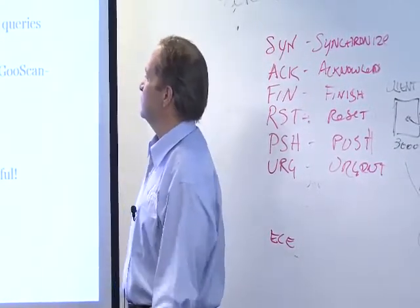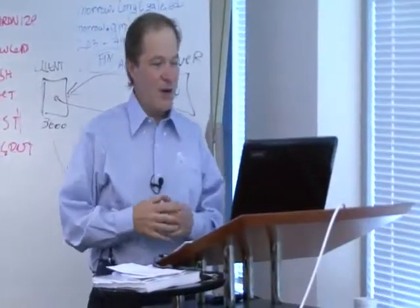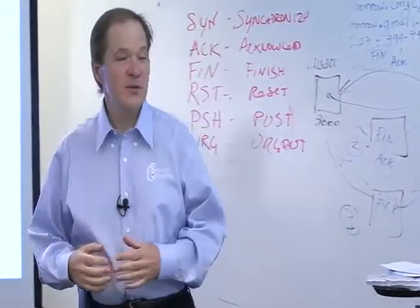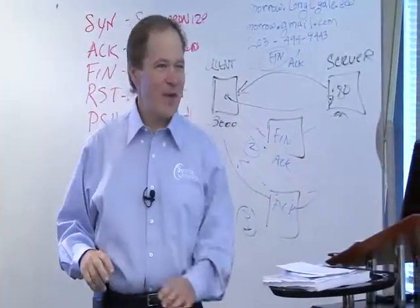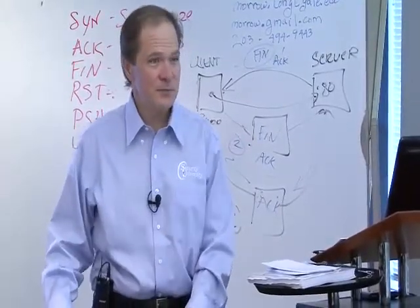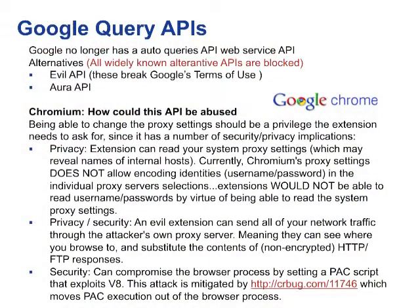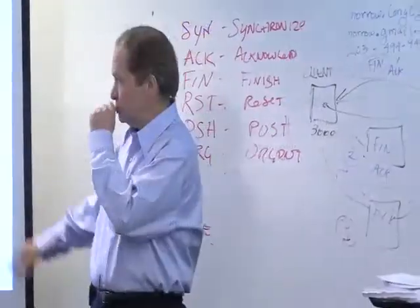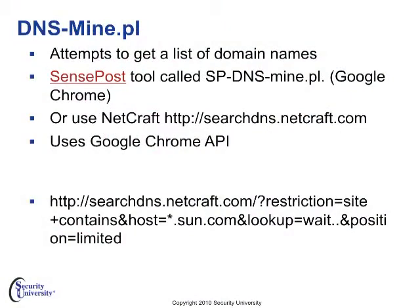Goosescan lets you automate searches using the Google hacking database. Note that Google has terms of use — you're violating them if you start banging on them with massive amounts of automated scans. They have the right to terminate service to you, and they keep a blacklist of IPs. The evil API and the Aura API are ones that will get you blocked if you use them. There's also a Perl script you can use to get a list of domain names using the Google Chrome API, which typically runs in the browser. Netcraft is a site that keeps track of what web servers people are running.